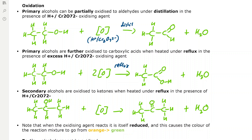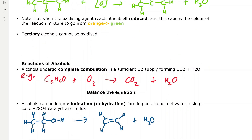When acidified potassium dichromate reacts to oxidize the alcohol, it is itself reduced, and this means that the color of the reaction mixture goes from orange to green. Tertiary alcohols resist oxidation, so they won't be oxidized by acidified potassium dichromate.